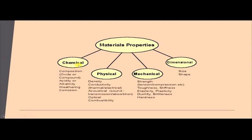Material properties can be classified into chemical properties, physical properties, mechanical properties, and dimensional related properties. In chemical properties we can have composition of material, whether it is an oxide or compound, acidity or alkalinity of material — whether it is acidic, basic, or neutral — and weathering or corrosion conditions.